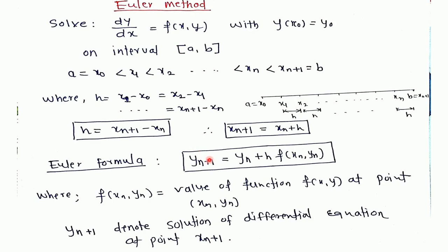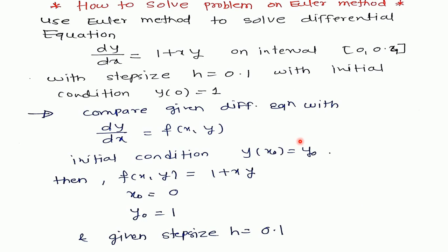To solve this differential equation we have the Euler formula: y_{n+1} = yₙ + h · f(xₙ, yₙ), where f(xₙ, yₙ) is the value of the function at point (xₙ, yₙ), and y_{n+1} denotes the solution of the differential equation at point x_{n+1}. Here y₀ denotes the solution at x₀, y₁ denotes the solution at x₁, y₂ denotes the solution at x₂, and so on.